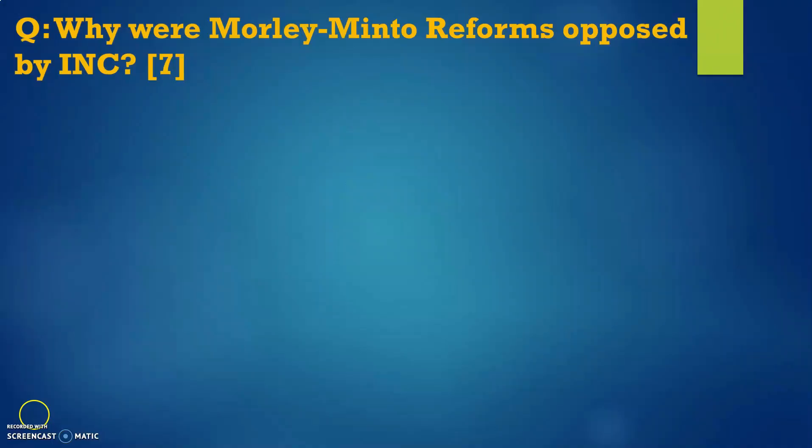Moving forward to our next content — we have already discussed the 4-mark question. Now we have another question from the same topic: why were the reforms opposed or rejected by the INC? For a 7-mark question we need three different paragraphs with three identified reasons and explanations. We will look at the content of each paragraph in the next three slides.